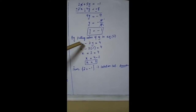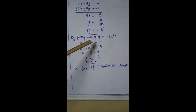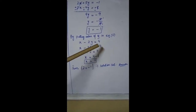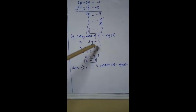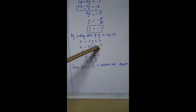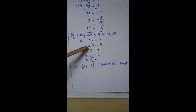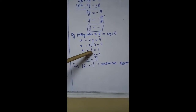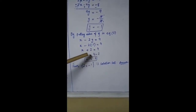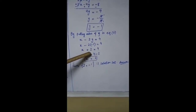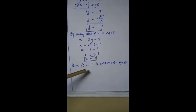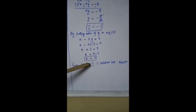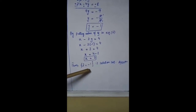By putting the value of y in equation 2: x - 2y = 4, so x - 2(-1) = 4, giving x + 2 = 4. Moving 2 to the other side, x = 4 - 2 = 2. Thus, the solution set is {2, -1}.